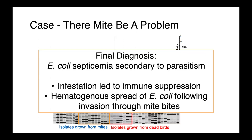Our final conclusion was that we had an E. coli septicemia that was secondary to parasitism. This massive infestation of mites led to immunosuppression and hematogenous spread of E. coli following invasion through the mite bites. These ectoparasites were acting as mechanical vectors, physically carrying E. coli from one bird to another and allowing it to enter through bite wounds. We never would have been able to prove the E. coli was coming from the mites without pulsed-field gel electrophoresis or something similar.